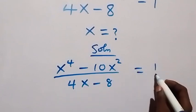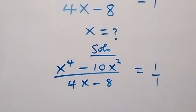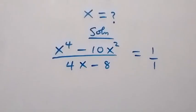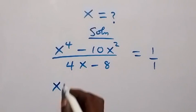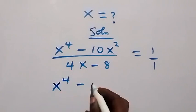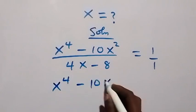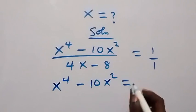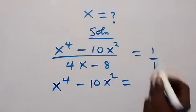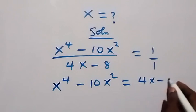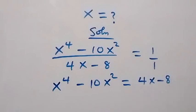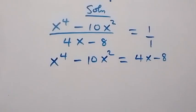We can see this is over 1 as well, then cross and multiply. So x raised to power 4 minus 10x squared is the same thing as x raised to power 4 minus 10x squared, equals to 4x minus 8 multiplied by 1. Let's take everything to one side.